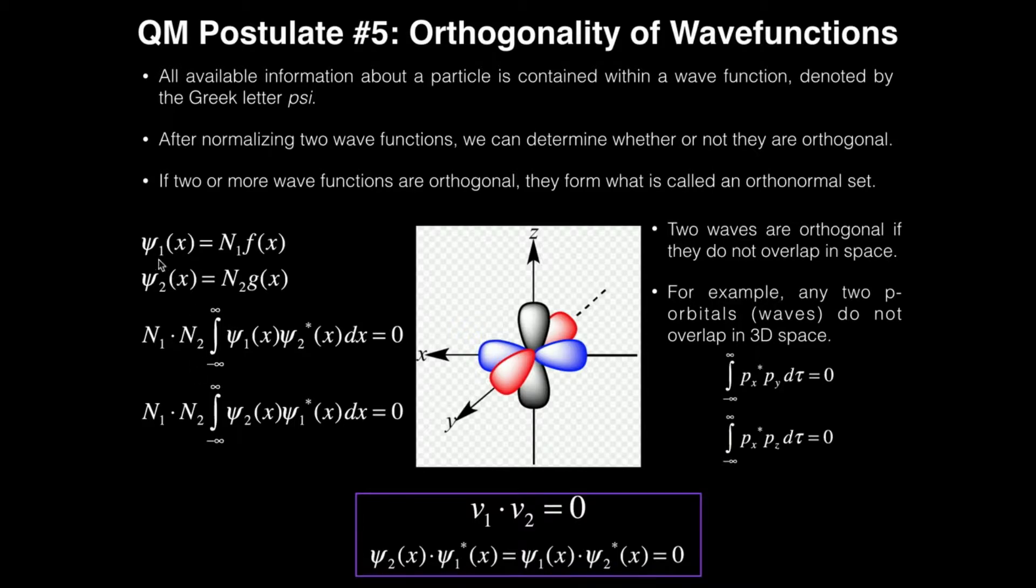Just keep in mind that for this, we're going to define two different wave functions because we don't want to use the same wave function. We want to use two different wave functions to see if they're orthogonal. So I'm going to call one of these ξ1 and the other ξ2. And just remember that this wave function is some function times its normalization constant, and the second wave function is some other function times its normalization constant.